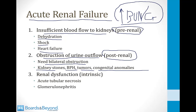The final mechanism is intrinsic renal dysfunction — renal failure from conditions like acute tubular necrosis and glomerulonephritis, which are covered in other modules.